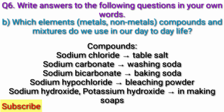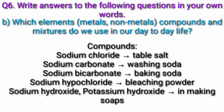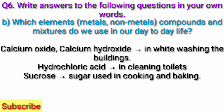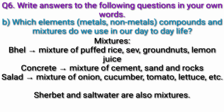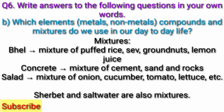Compounds: Sodium chloride - table salt. Sodium carbonate - washing soda. Sodium bicarbonate - baking soda. Sodium hypochlorite - bleaching powder. Sodium hydroxide and potassium hydroxide - in making soaps. Calcium oxide and calcium hydroxide - in whitewashing buildings. Hydrochloric acid - in cleaning toilets. Sucrose - sugar, used in cooking and baking. Mixtures: Bhel - mixture of puffed rice. Chivda and groundnuts. Lemon juice. Concrete - mixture of cement, sand and rocks. Salad - mixture of onion, cucumber, tomato, etc. Sharbat and salt water are also mixtures.